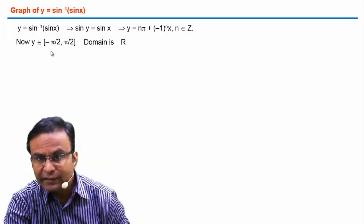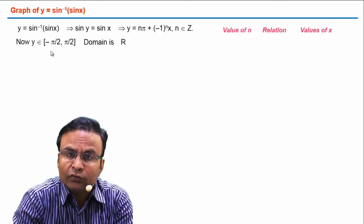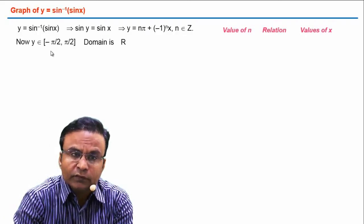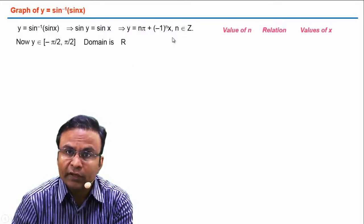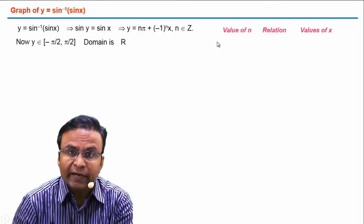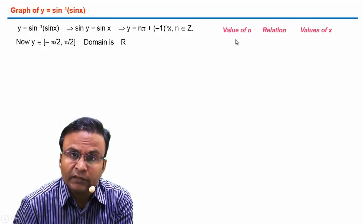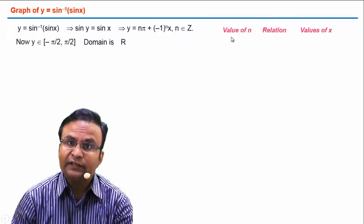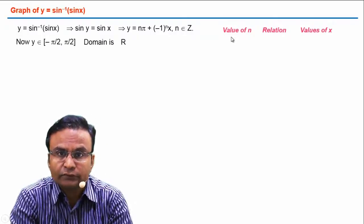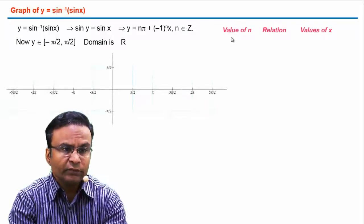Based on this discussion, let's create a table. In the general solution equation, we will put different values of n. For each n, we find a relation between y and x, and from that relation we find the values of x for which that relation is valid. Here is the graph paper.